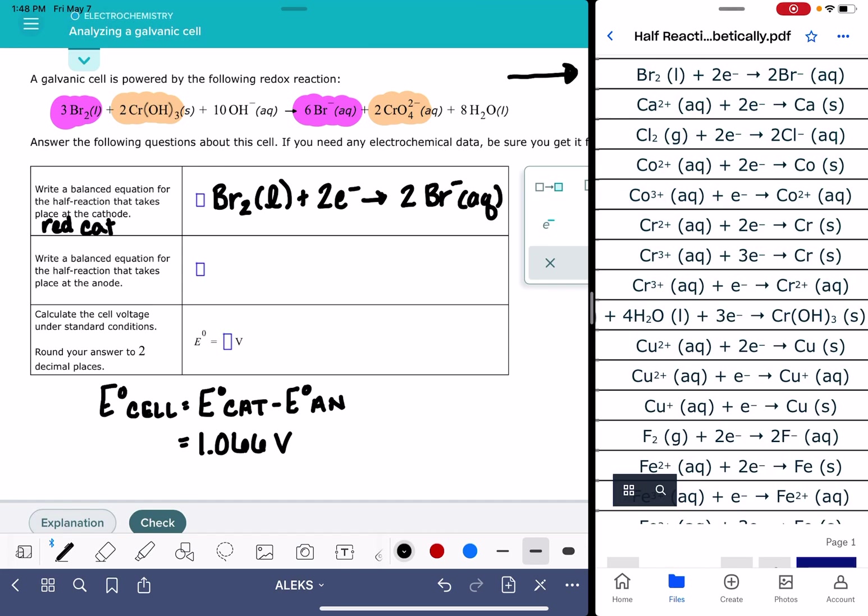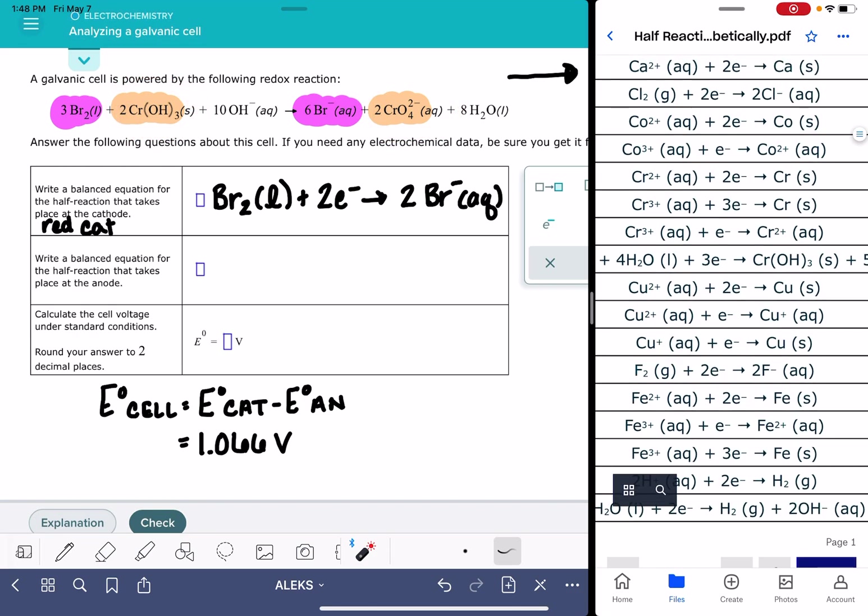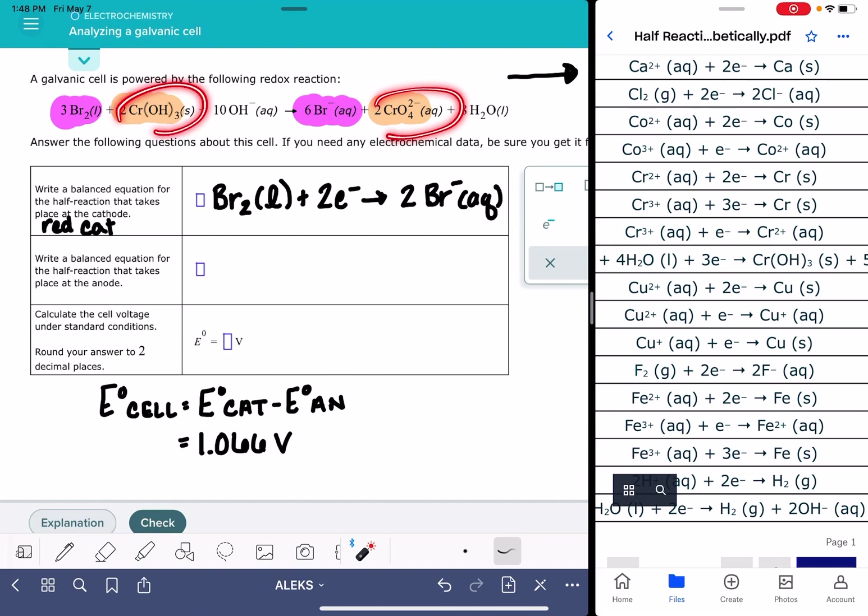Okay, so that means that we've got half of this done. Now we're going to look for the chromium, and this one is going to be an oxidation reaction. This is taking place at the anode, which means that in this table of half reactions, the chromium reaction is actually going to be written backwards, because the chromium is an oxidation, and these are all written as reductions.